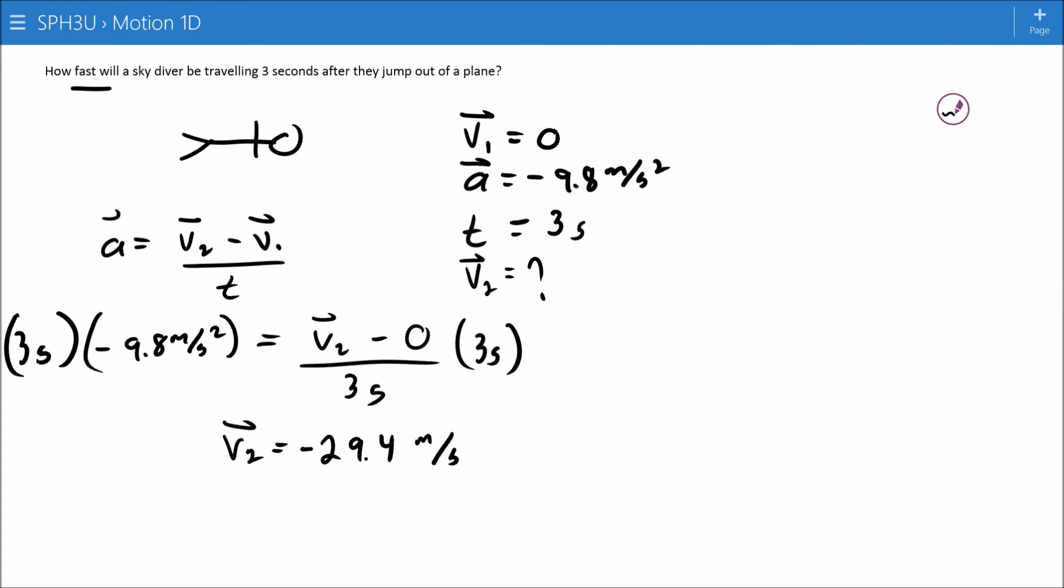I have a V2 of 29.4 meters per second, negative. Again, the negative here refers to the fact that the skydiver is going in the down direction.